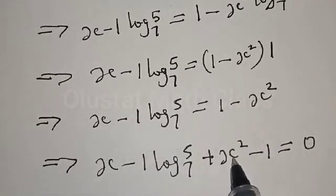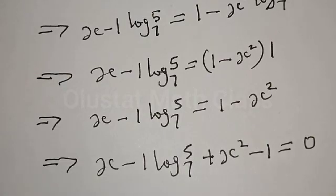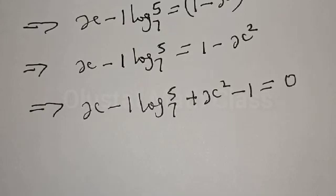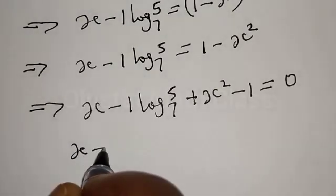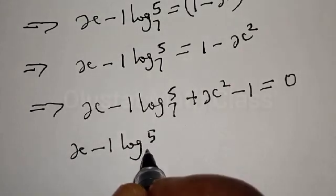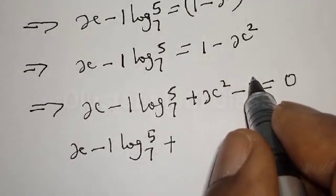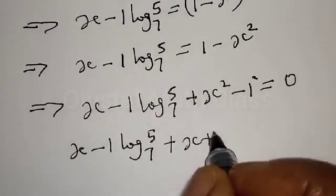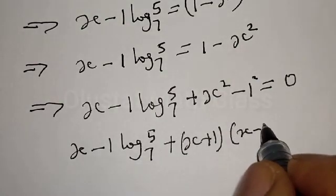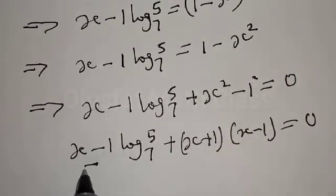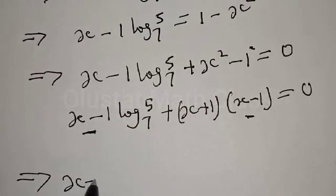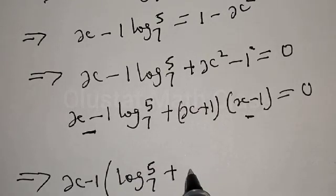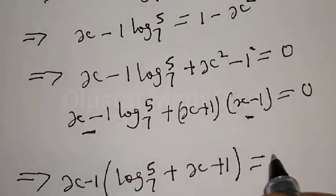That is, if minus x squared comes to the other side it becomes plus x squared, and this plus 1 becomes minus 1, equal to zero. Now x squared minus 1 is a difference of two squares, which can be written as x plus 1 into x minus 1 equal to zero. So we have x minus 1 into log 5 base 7 plus x plus 1 equal to zero.